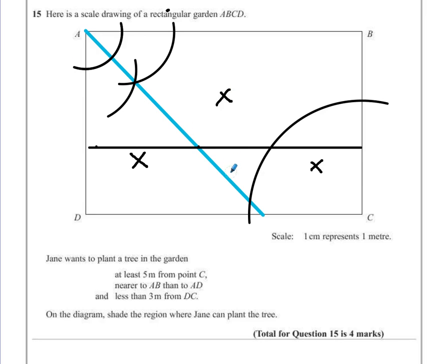which is the area that can be used. So we have to make sure it says shade the region where she can plant the tree, so we have to make sure that this is the part that we are colouring in. Using a pencil is fine, just making sure that we are indicating that that is the space that can be used.